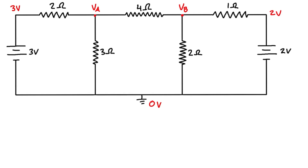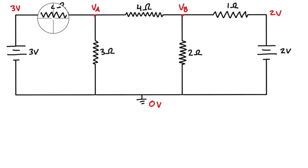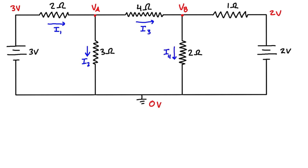In nodal analysis, all we do is apply Kirchhoff's current law at each node that has an unknown voltage. We have two unknown nodes, so we need to consider the current flowing into and out of node A and also node B. We'll assume some directions — it doesn't actually matter if we get them right or wrong. Let's call them i1, i2, i3, i4, and i5.